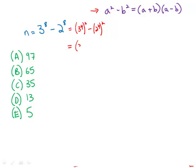So of course, this factors into 3 to the 4th plus 2 to the 4th times 3 to the 4th minus 2 to the 4th.